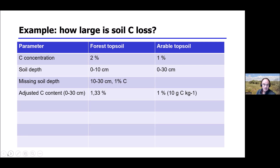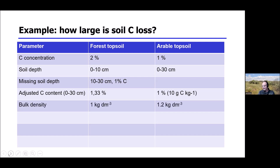This comparison suggests we lost about 30%, but that is still not correct because we must consider how much mass is contained at a certain depth — that is, the bulk density: how much mass of soil is stored in a given volume. If we take one liter (one cubic decimeter), a typical bulk density of 1.0 in a forest soil means one kilogram of soil is stored per liter.